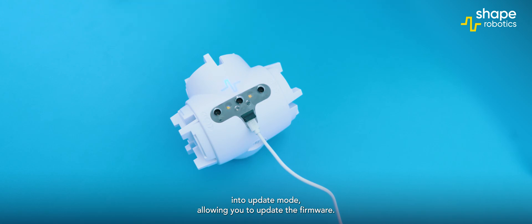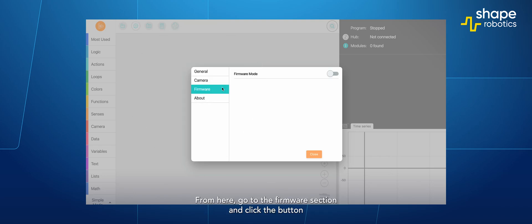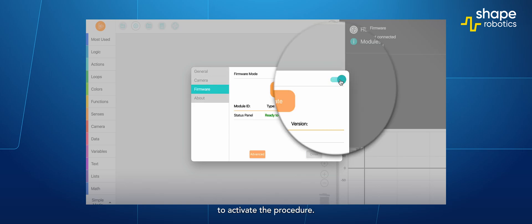This puts the module into update mode, allowing you to update the firmware. Press the settings button on your computer and the settings window will open. From here, go to the firmware section and click the button to activate the procedure.